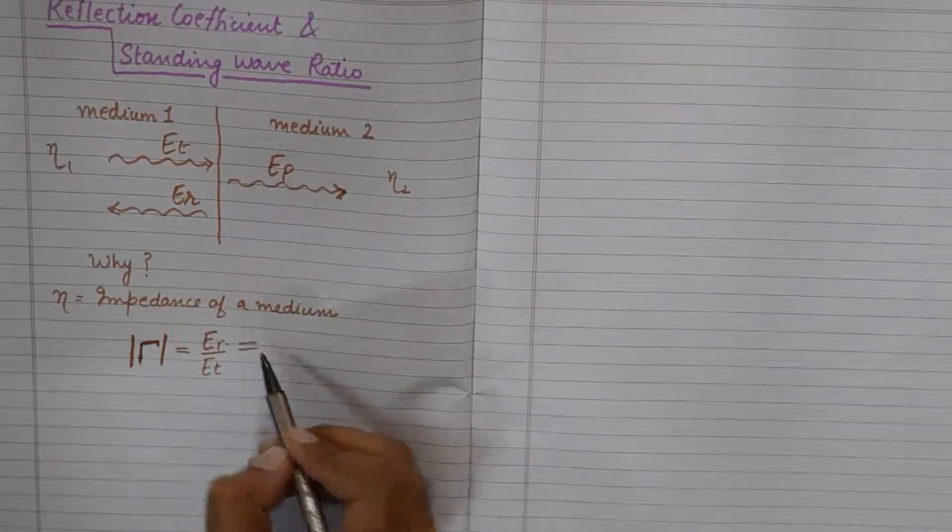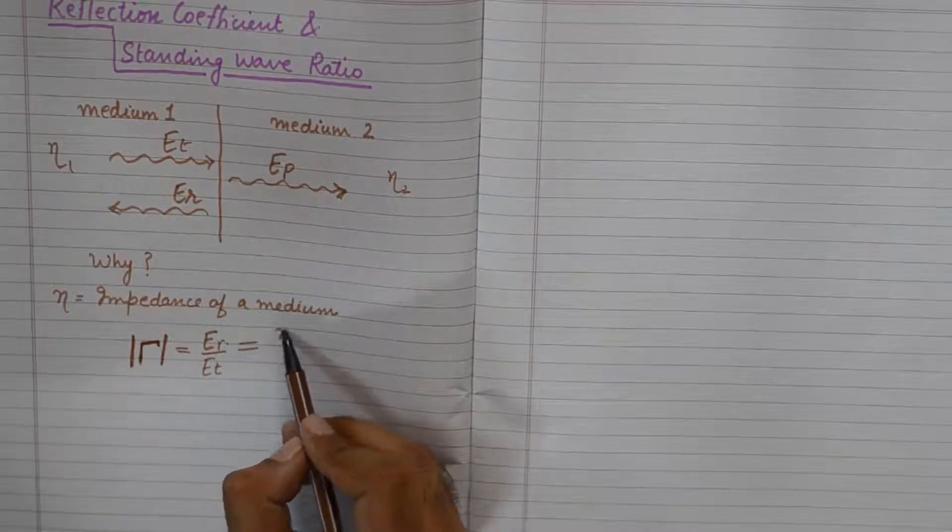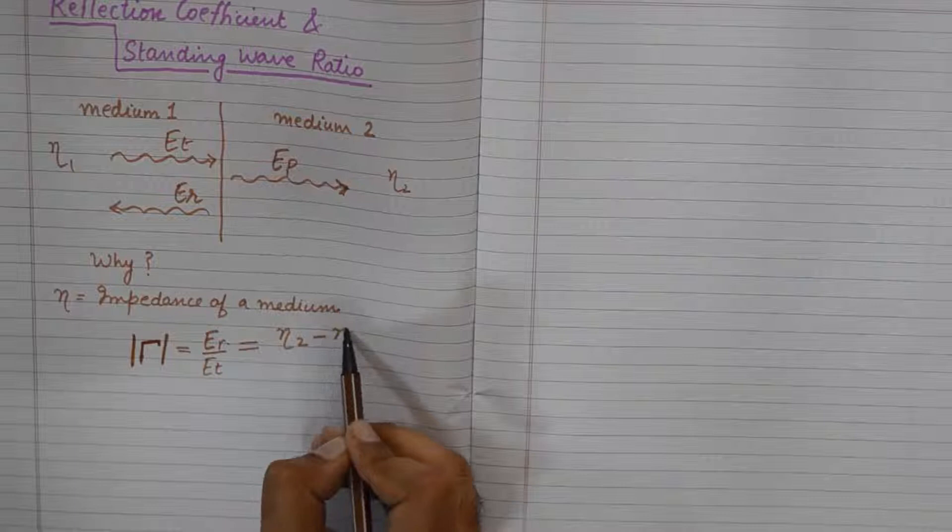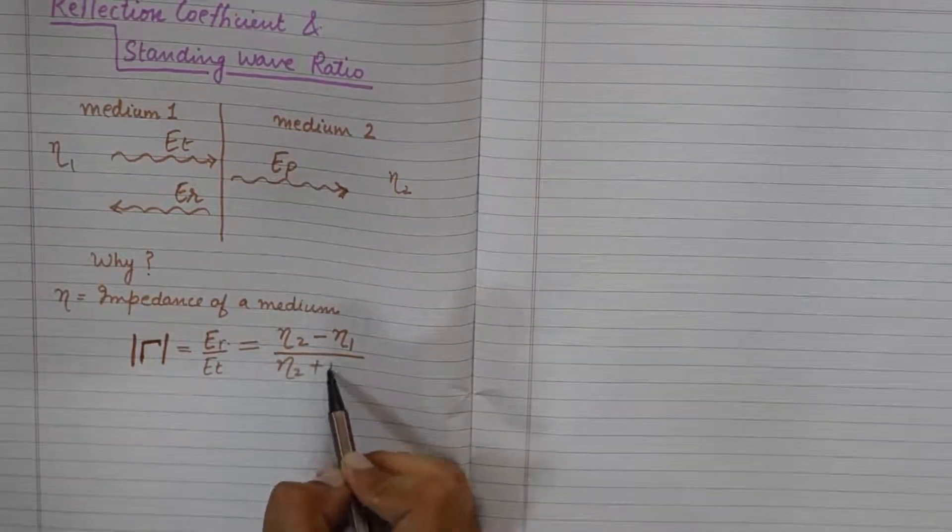And the formula for this is even simpler. It says that this is equivalent to Eta 2 minus Eta 1 upon Eta 2 plus Eta 1.